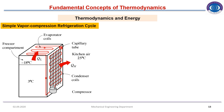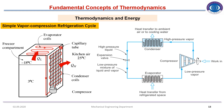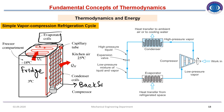Simple vapor compression refrigeration cycle: this is a household fridge. At the top of the cabinet you can see evaporator coils, and at the back of the fridge at the bottom you can see the compressor. The multiple coils at the back of the fridge are the condenser coils.